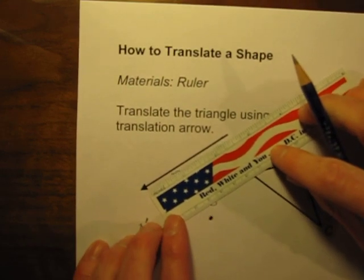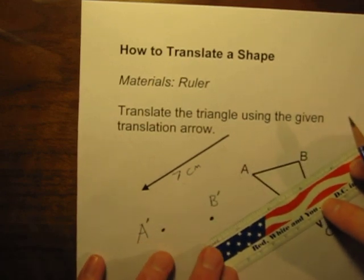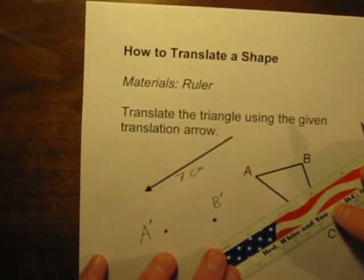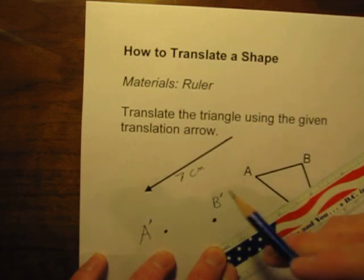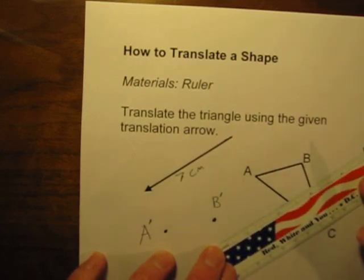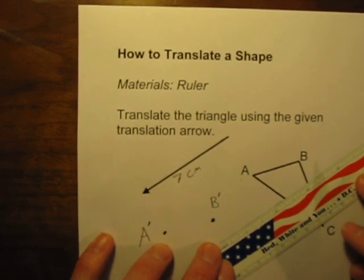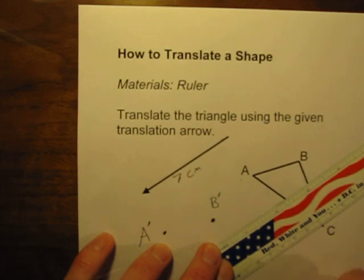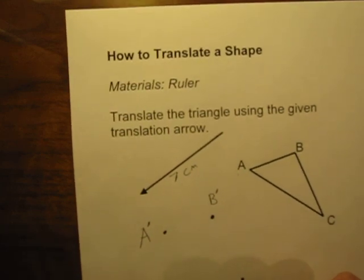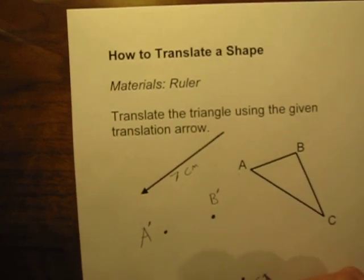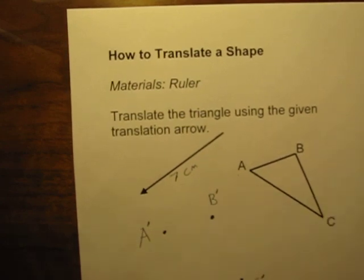I'm going to try to make sure that my ruler is at least approximately parallel to that arrow right there. And again, it's not perfect, but it's going to be close enough for our purposes here. At least close enough for my purposes in my classroom. And I'm going to put a little mark there, seven centimeters away from point C. There is the new point C or C prime.